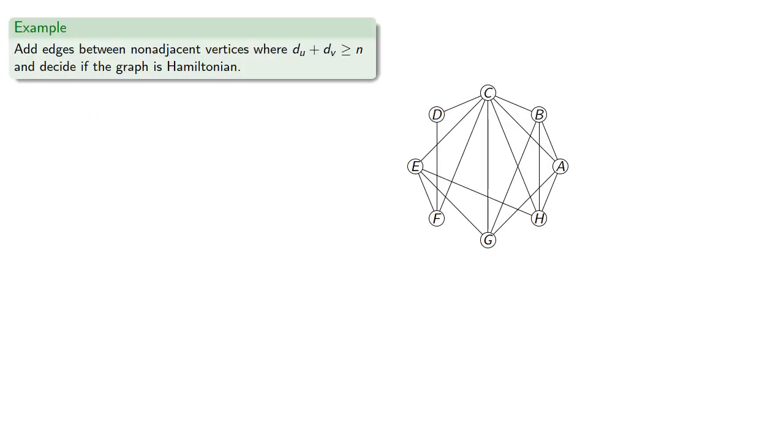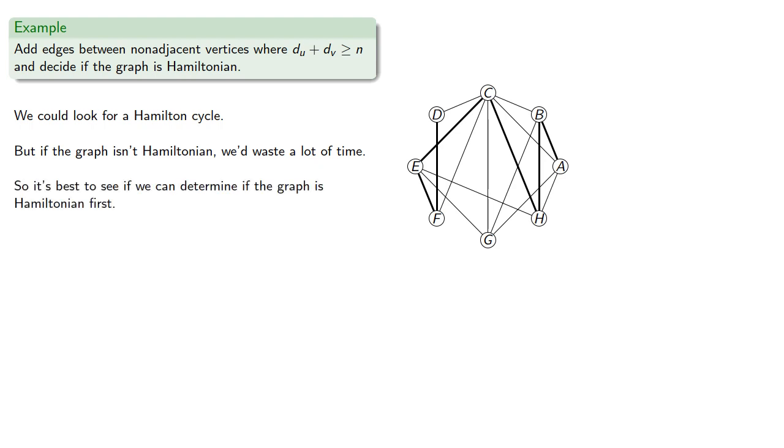So for example, let's say we wanted to decide whether a graph was Hamiltonian. We could look for a Hamilton cycle. But if the graph isn't Hamiltonian to begin with, we'd waste a lot of time. So it's best to see if we can determine if the graph is Hamiltonian first.